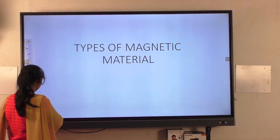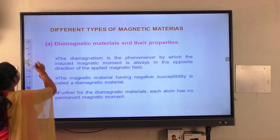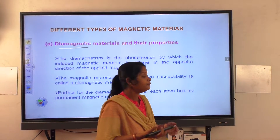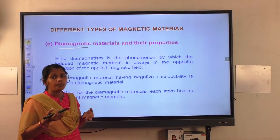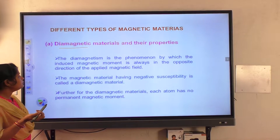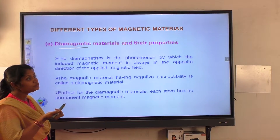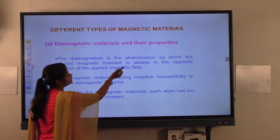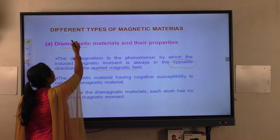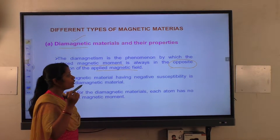First, we are going to discuss diamagnetic materials. These are materials in which the magnetic moment is opposed, or moves in the opposite direction of the magnetic field. In diamagnetic materials, the induced magnetic moment is always in the opposite direction of the applied magnetic field.